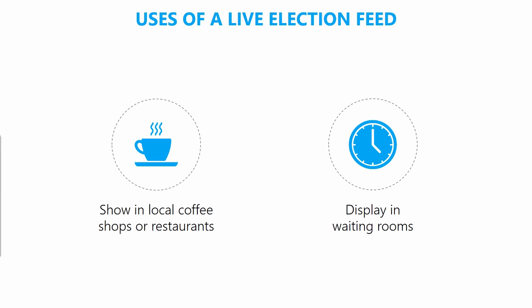So what are the uses of being able to display a live election feed right in your digital signage, right on your computer monitors? You can show them in local coffee shops, restaurants, you can display them in waiting rooms, and YouTubers can even use them for broadcasting online. So there's lots of ways that they can be used.